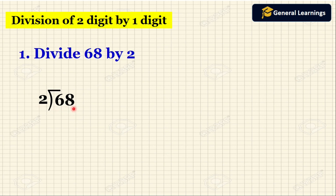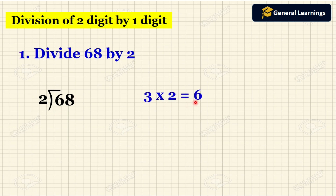Here 68 is a two-digit number whereas the divisor 2 is a single-digit number. So first we need to take the first digit of 68, which is 6, and then divide 6 by 2. Now to divide, we need to check the multiplication table of 2 to see whether 6 is coming or not. The multiplication table of 2 tells us 3 twos are 6, so we write 3 above, and then write the product 6 below 6 and draw a line.